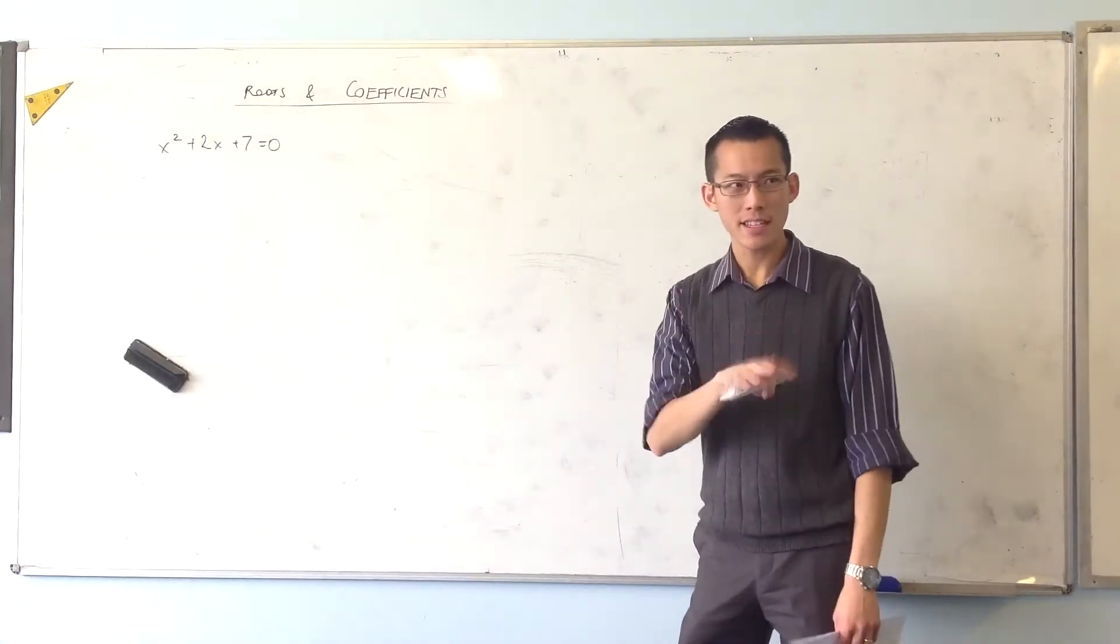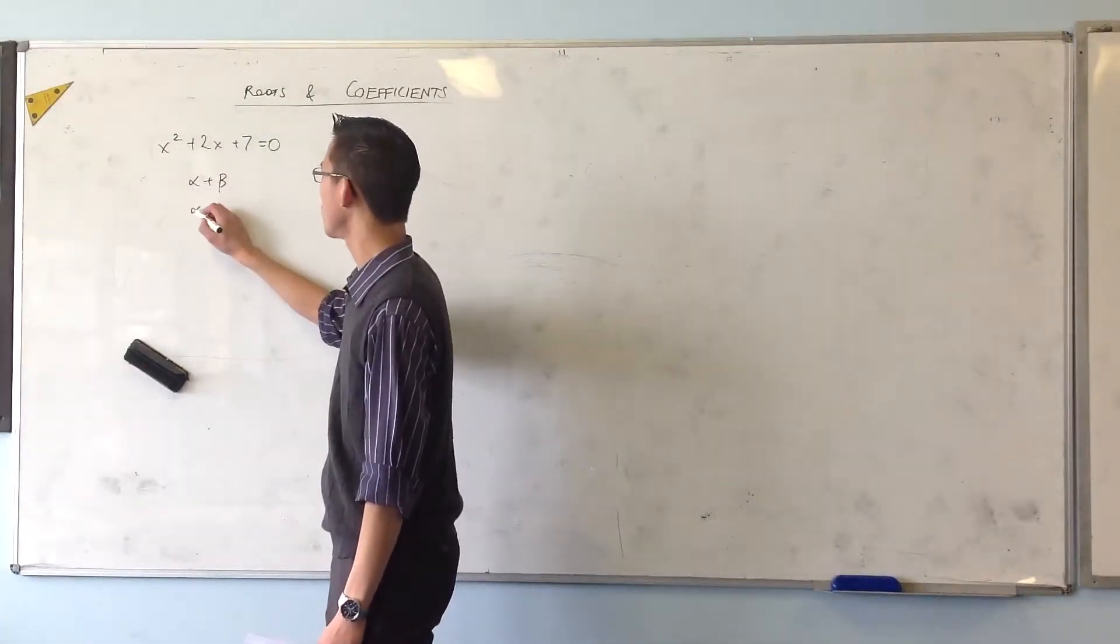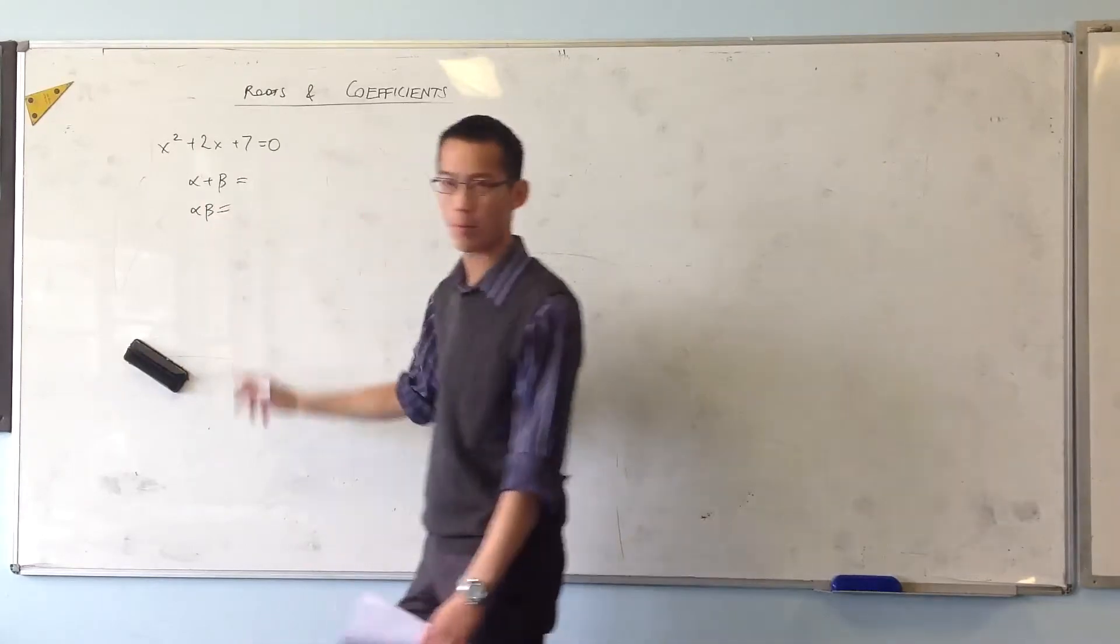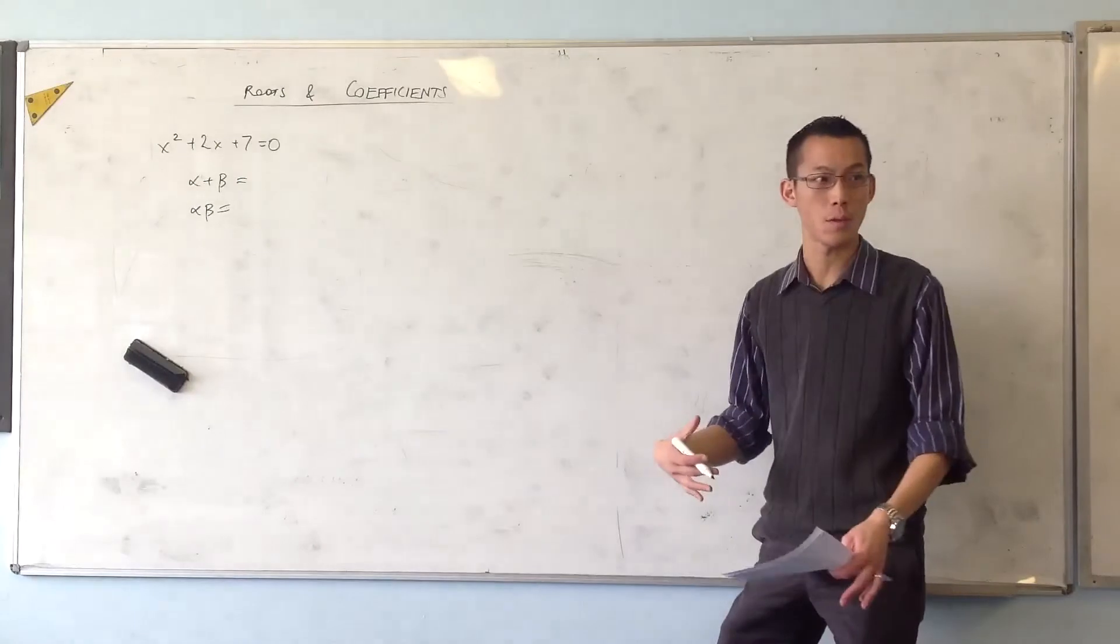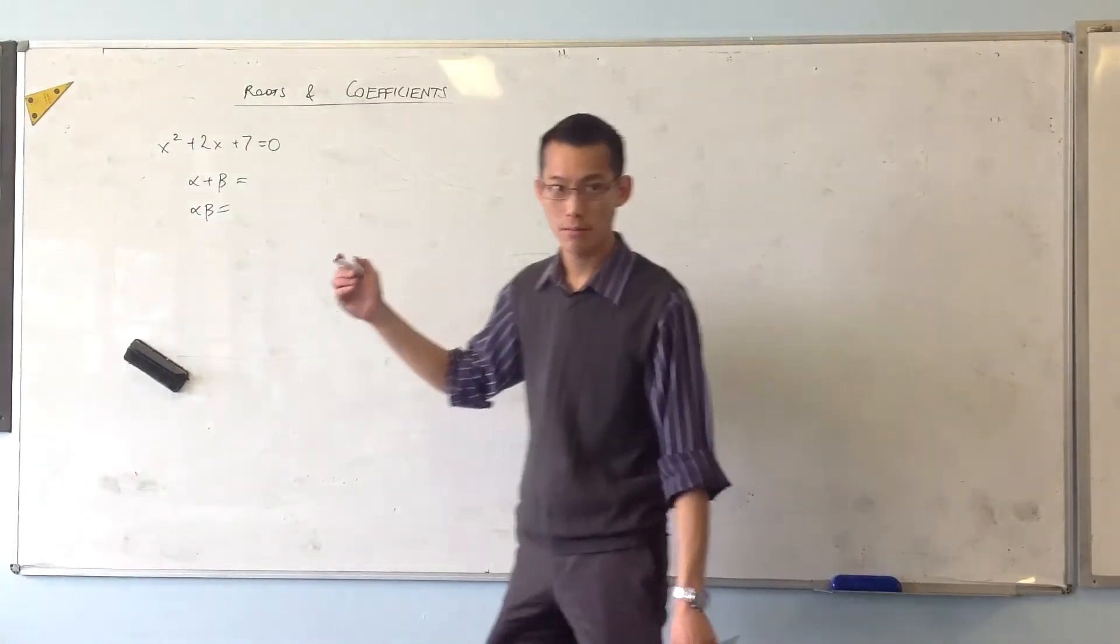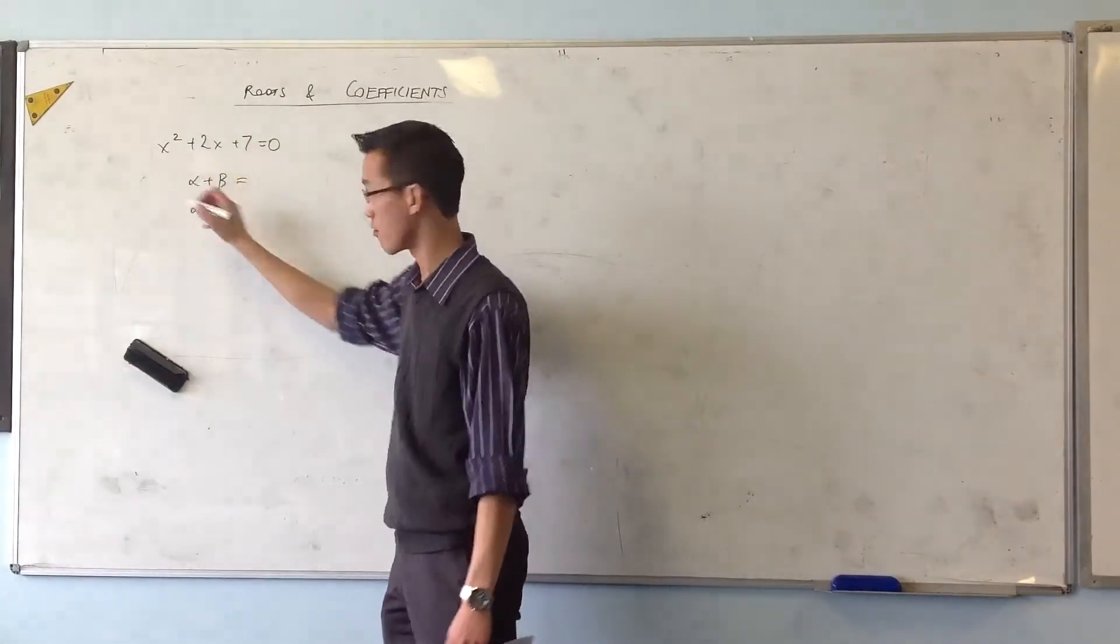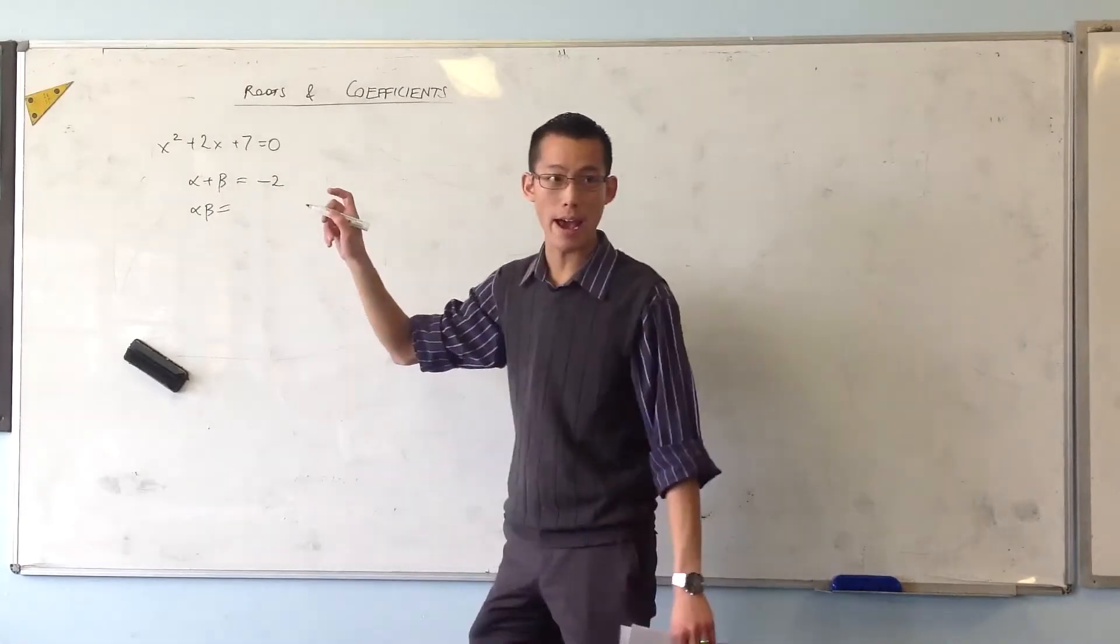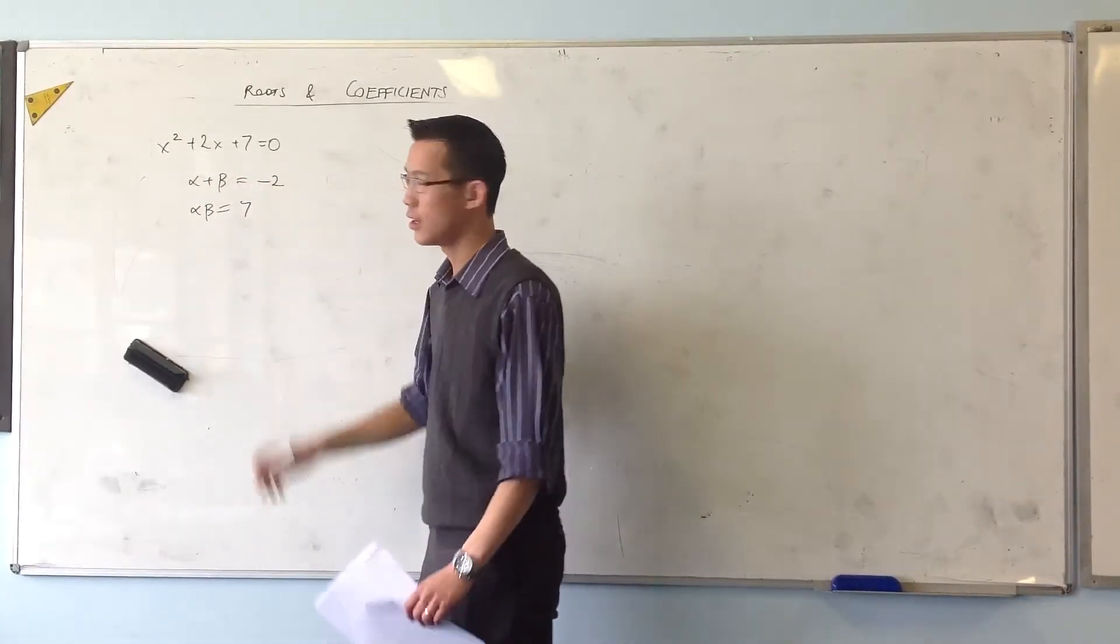Now that doesn't mean though that you can't still work out what the sum and product of these are. Because even though they might be complex, when you put them together different ways you end up just having real numbers. For instance, what is the sum of roots in this case? It's just minus b on a. And in the same way you've got the product being 7.